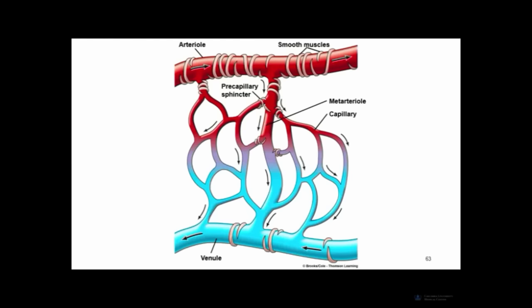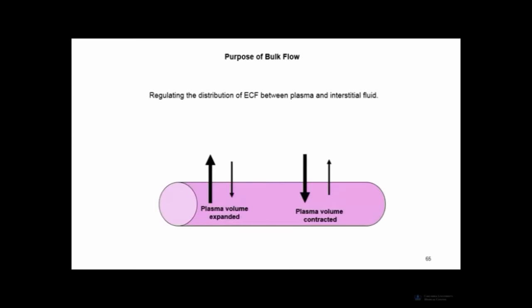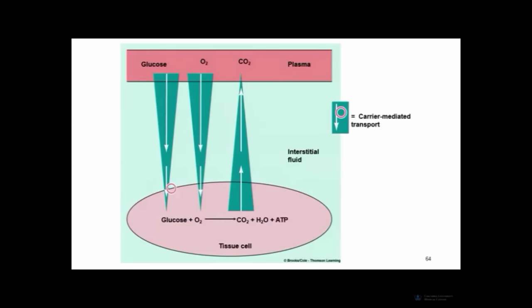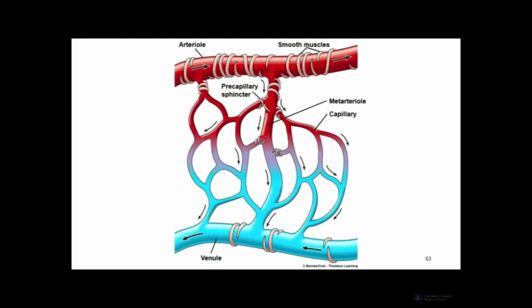Pre-capillary sphincters help control the degree to which capillary beds are perfused, regulating regional blood flow distribution at an even deeper level than the arterioles. Meta-arterioles have the same composition as capillaries — just naked endothelium — but are larger, so they offer less exchange surface area.